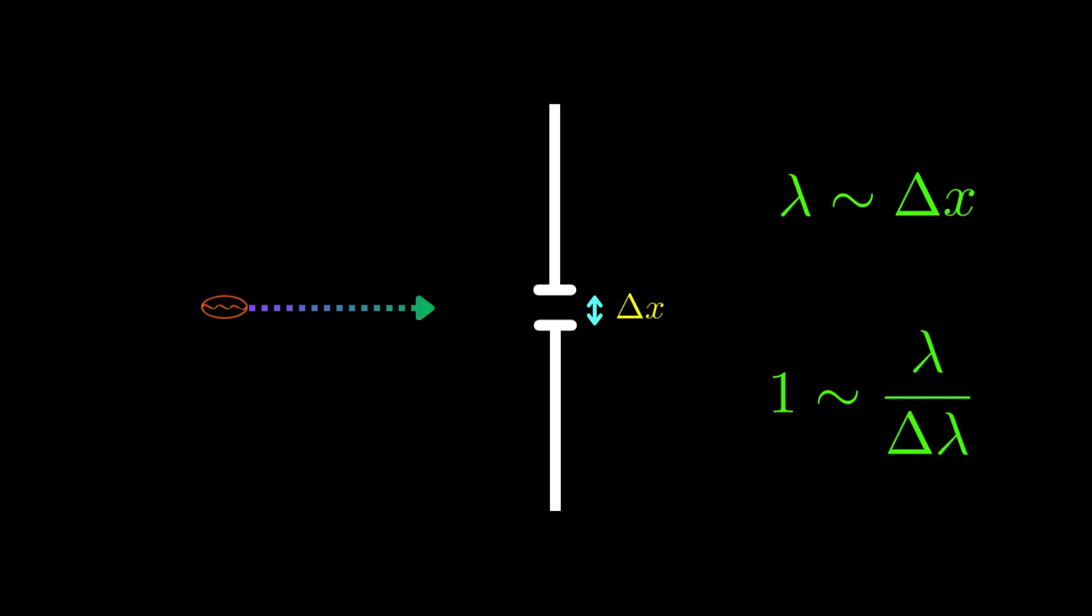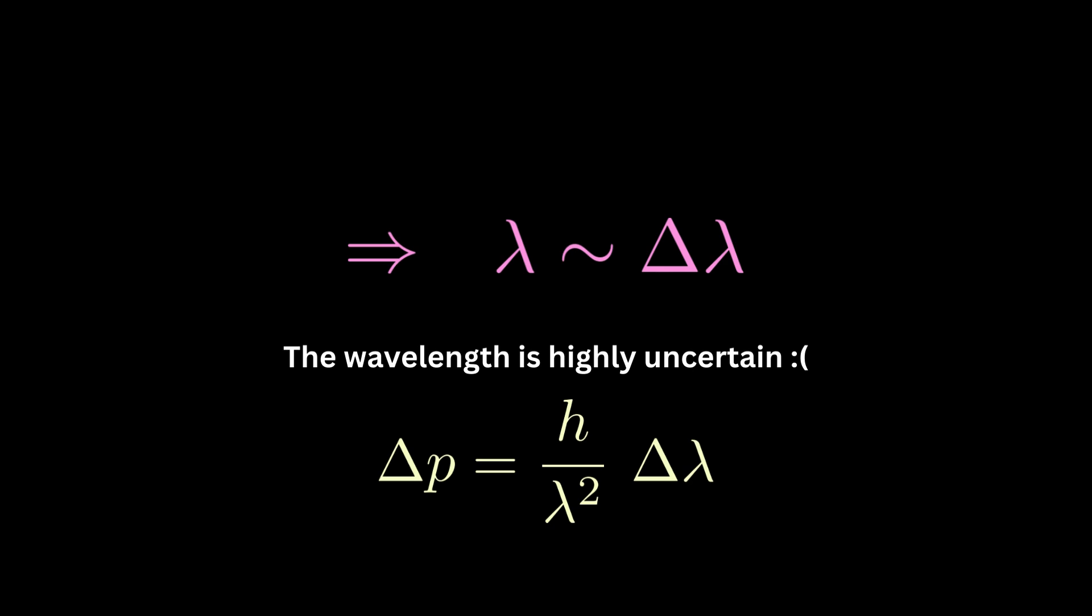The error in wavelength is equal to, or of the order of wavelength itself you want to measure. The wavelength is simply very uncertain. Which means, from the relation again, that the momentum is highly uncertain as well.